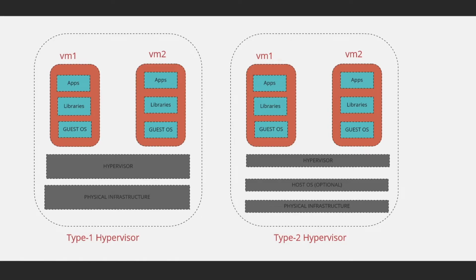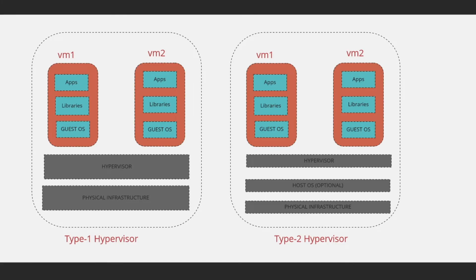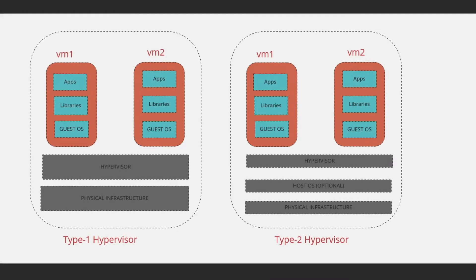A Type 2 hypervisor is called a hosted hypervisor — it runs on a conventional operating system as a software layer or application. For example, Oracle VirtualBox, which you install on top of an operating system already installed on a physical machine.